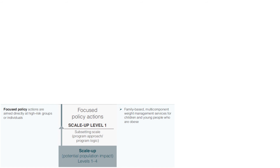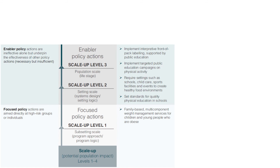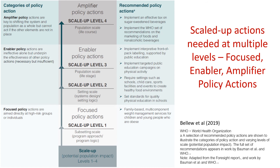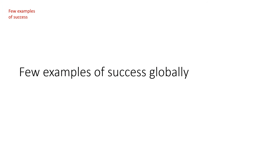We need to act at three levels. Focus policy actions at scale-up level 1 are aimed directly at high-risk groups or individuals. Enabler policy actions at scale-up levels 2 and 3 are ineffective in themselves, but they underpin the effectiveness of other policy actions — necessary but insufficient. Amplifier policy actions at scale-up level 4 are key to shifting the system and population as a whole, but they cannot act if the other elements are not in place at scale-up levels 1, 2 and 3. We need these actions at multiple levels: focused, enabler, and amplifier policy actions.